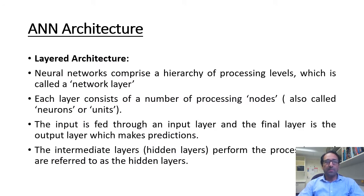Neural networks comprise a hierarchy of processing levels. Each level is called the network layer and consists of a number of processing nodes, also called neurons. The input is fed through an input layer and the final layer is the output layer which makes predictions. The intermediate layers perform the processing and are referred to as the hidden layers. Due to this layered architecture, this neural network is called a multi-layered perceptron or MLP.